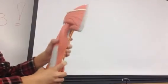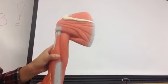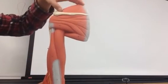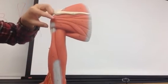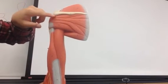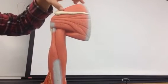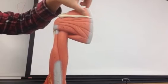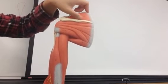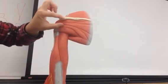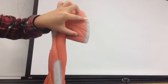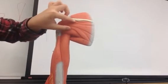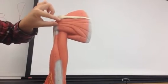And supraspinatus and infraspinatus. So remember, the supraspinatus means above the spine. And infraspinatus is below the spine, right? So the supraspinatus is this part right here. The infraspinatus is this part right here. And it's only this section. So it's only this little triangular looking muscles over here.